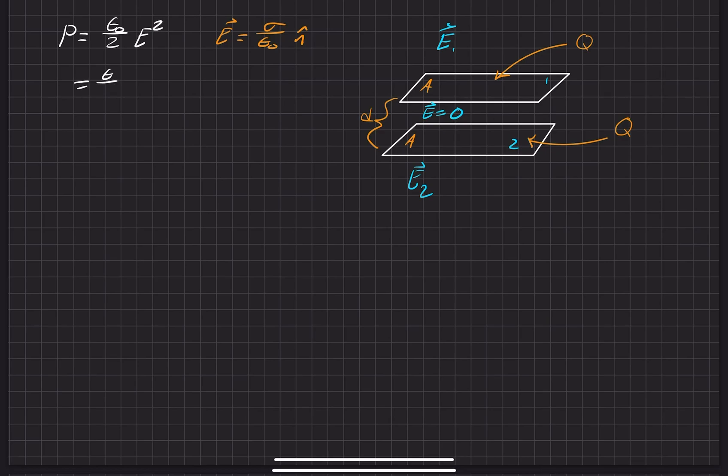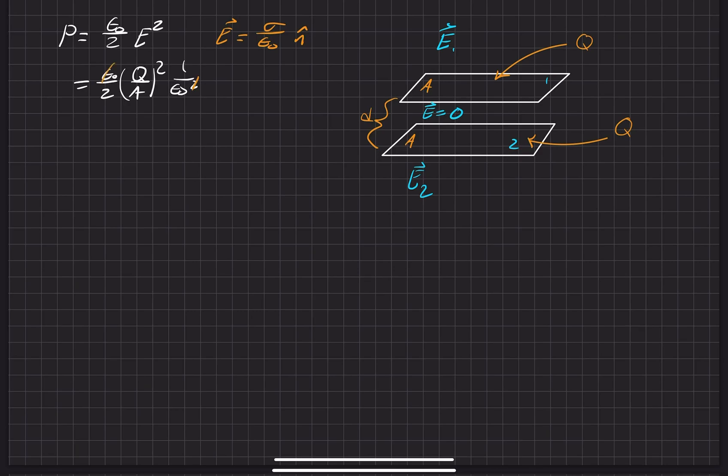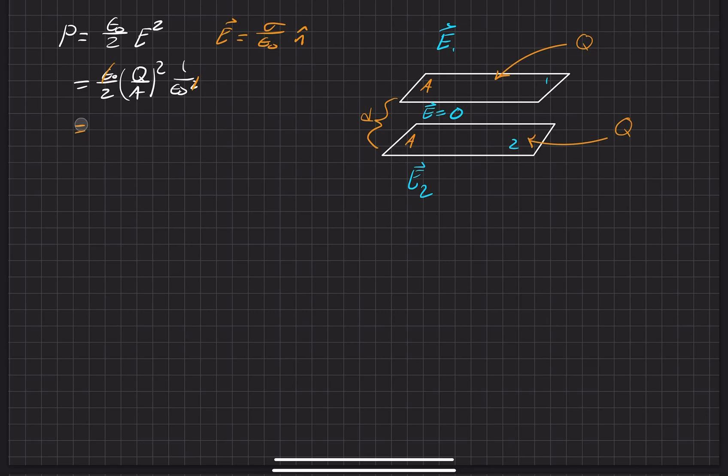So it's equal to epsilon naught over 2, and then sigma, which is the total charge divided by the area. When we put it in here, that's just Q over A. This is going to be squared, and we divide it by epsilon naught, which is also squared, so that will be epsilon naught squared.